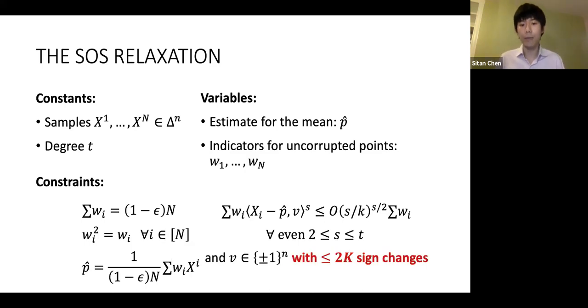The constraints are precisely that v_i² = 1 for all i from 1 to n. But now if I pass this more sophisticated family of test vectors, where I have this extra sign change constraint, it's no longer clear how to encode this challenging combinatorial constraint using algebraic ones.